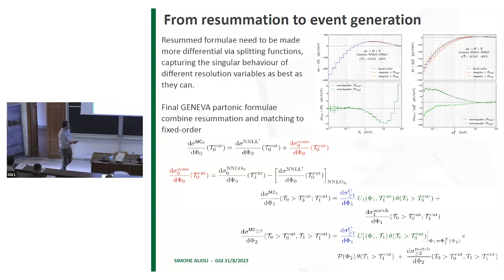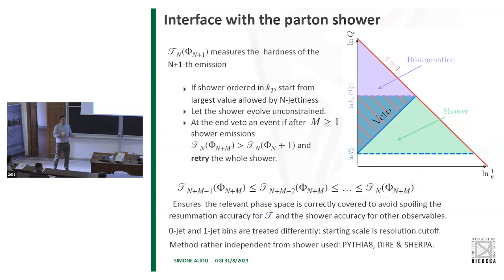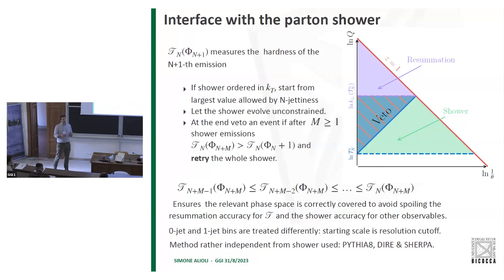The Geneva partonic formula combines this extended resummation with matching to fixed order, yielding events with zero, one, or two extra emissions as expected for an NNLO event generator. The interface with the parton shower is complicated by the interplay between the resummation variable and the shower's evolution variable. If they were the same, the shower could never regenerate inside the region already included in the resummation. If they differ, one must force the shower not to generate in the region already covered, typically done by reshowering events until this condition is satisfied.